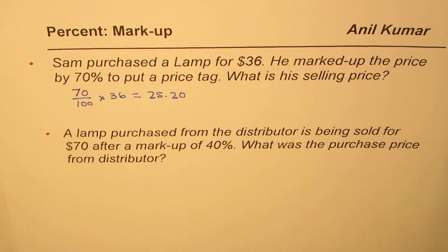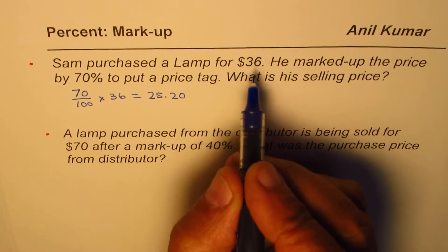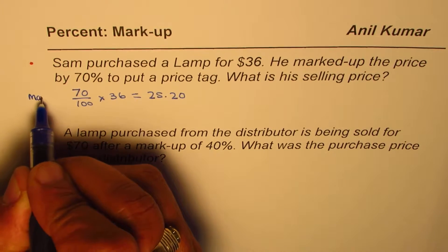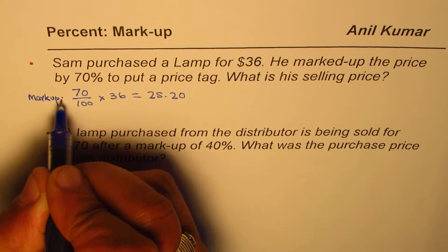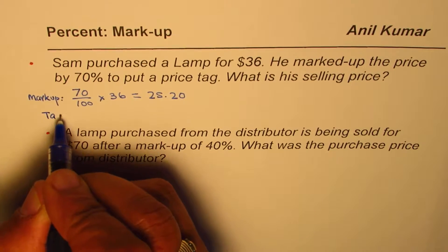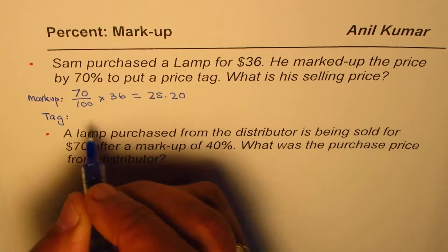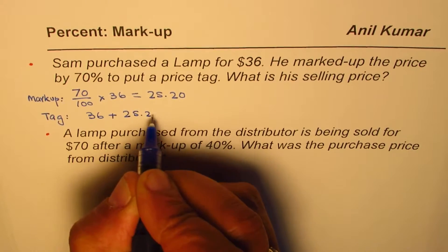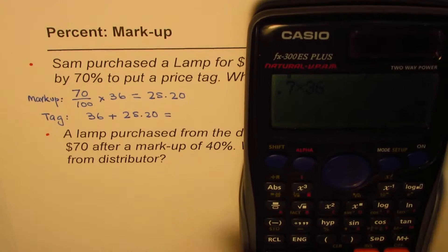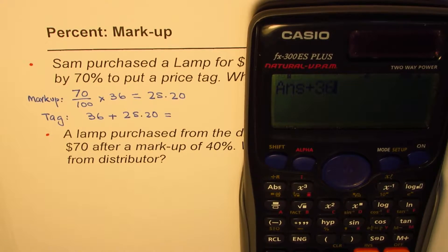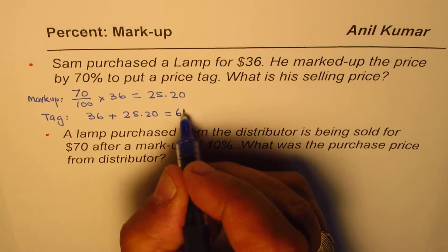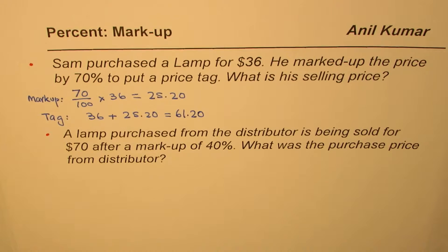Markup means you have to increase the original price by that amount. So the tag price is going to be the original price, which is $36, plus the markup of $25.20. So 36 plus 25.20 equals $61.20. That is one way of calculating markup.